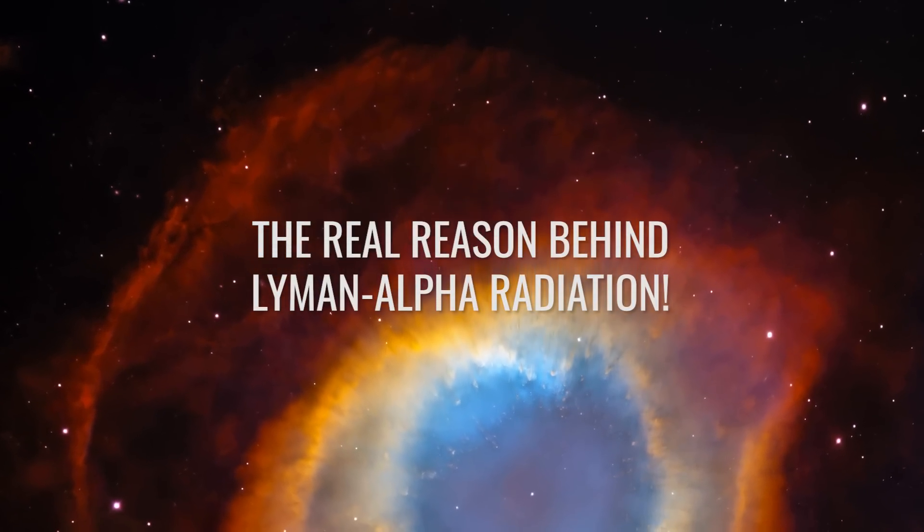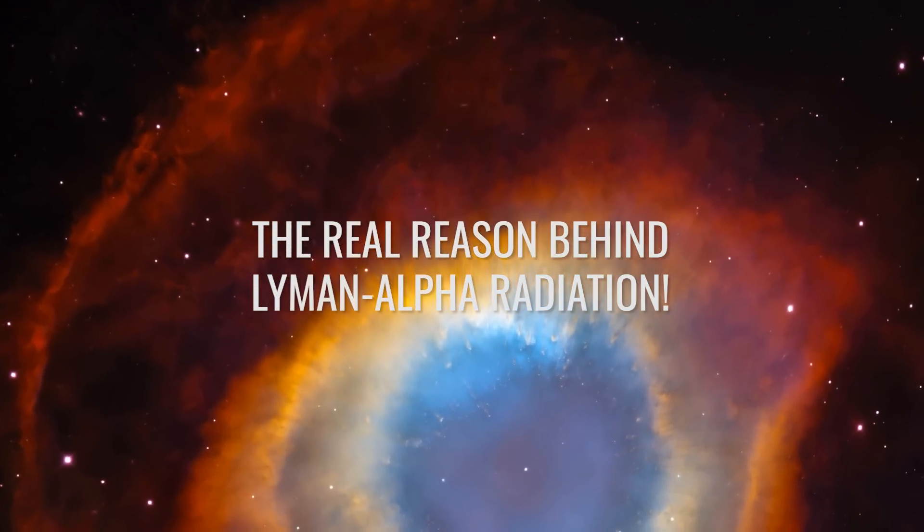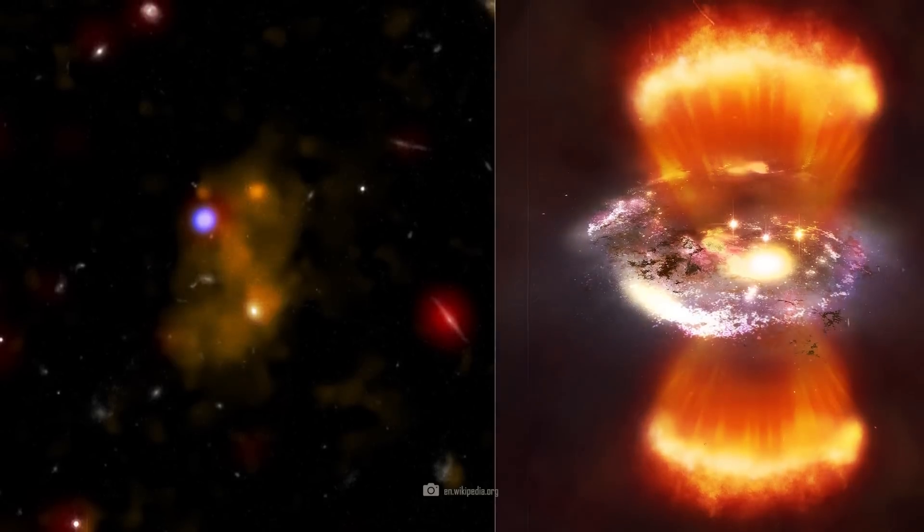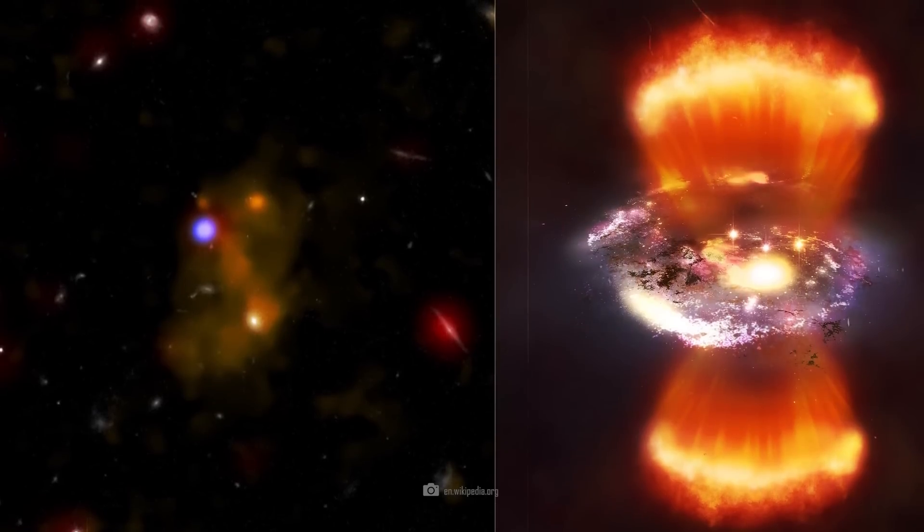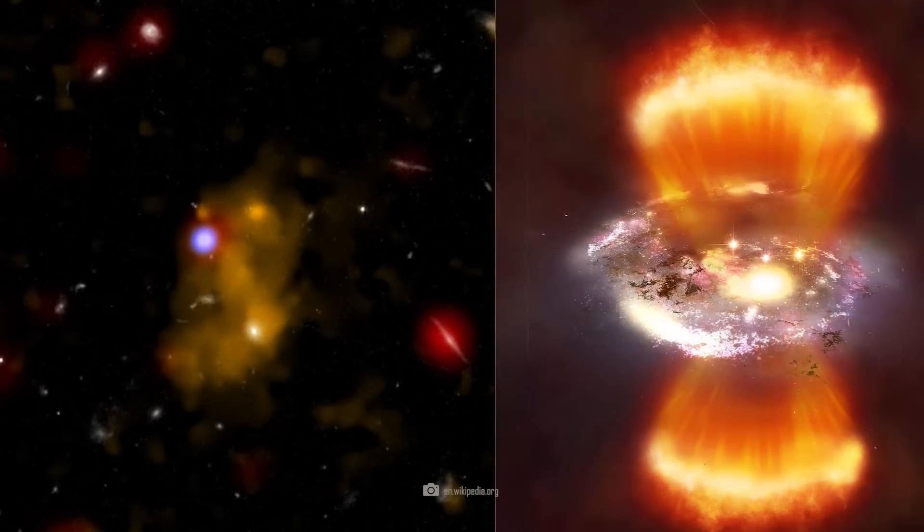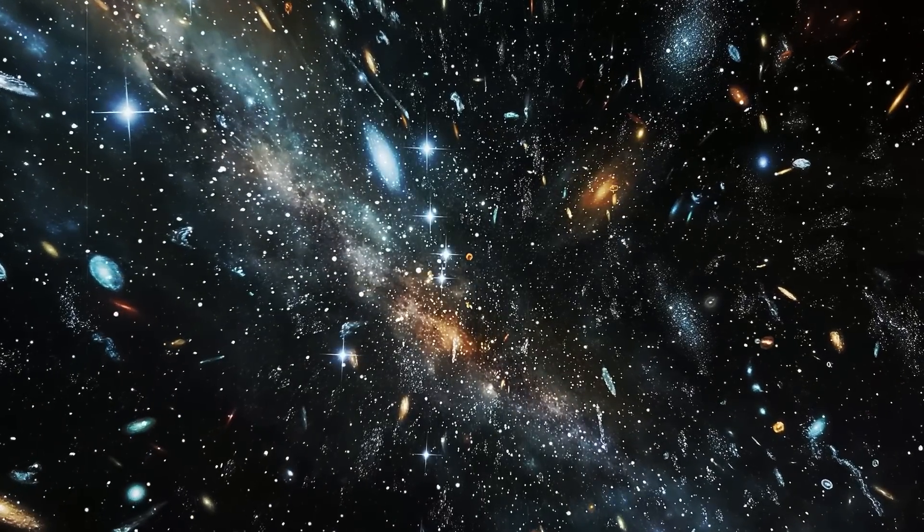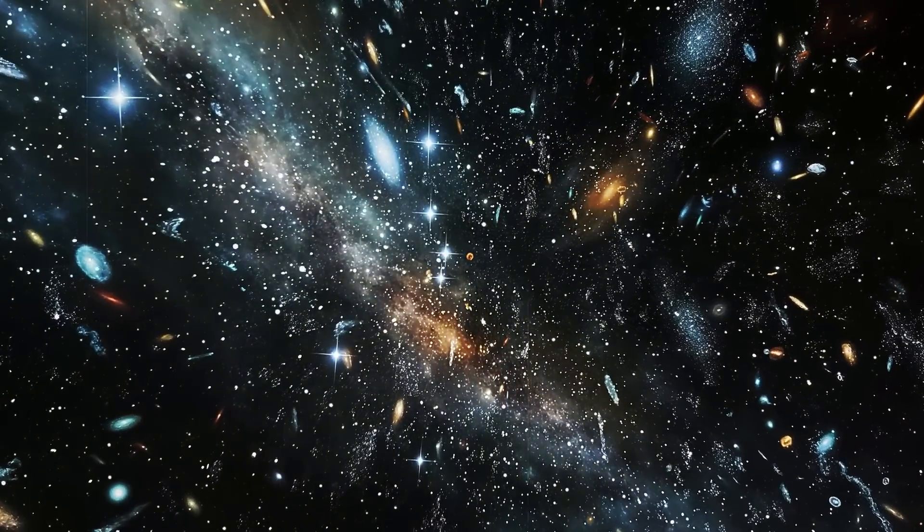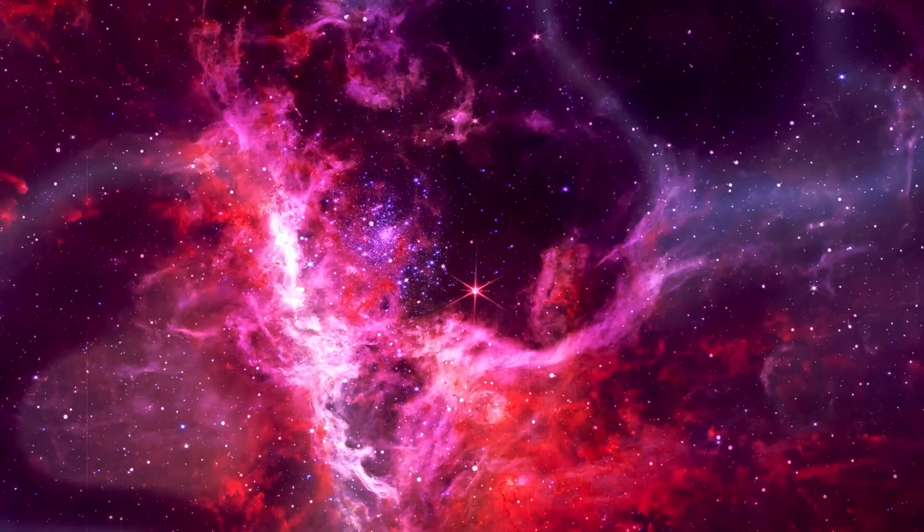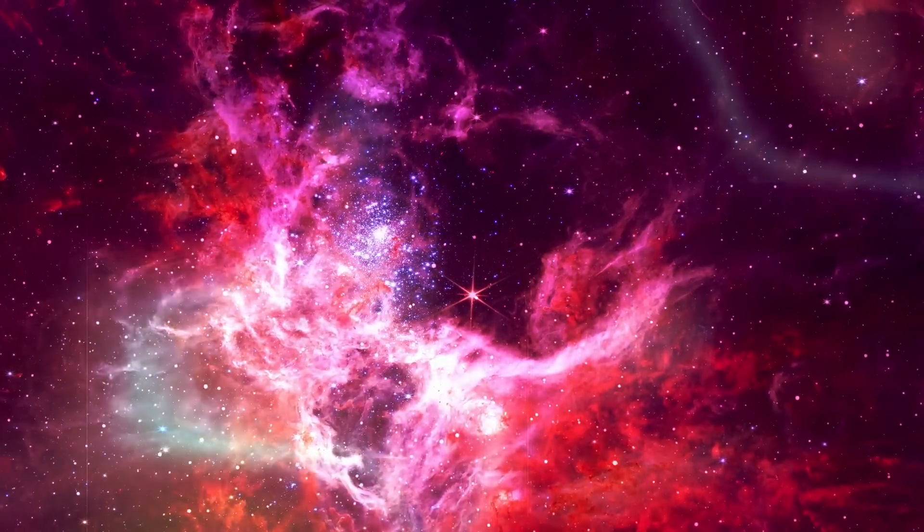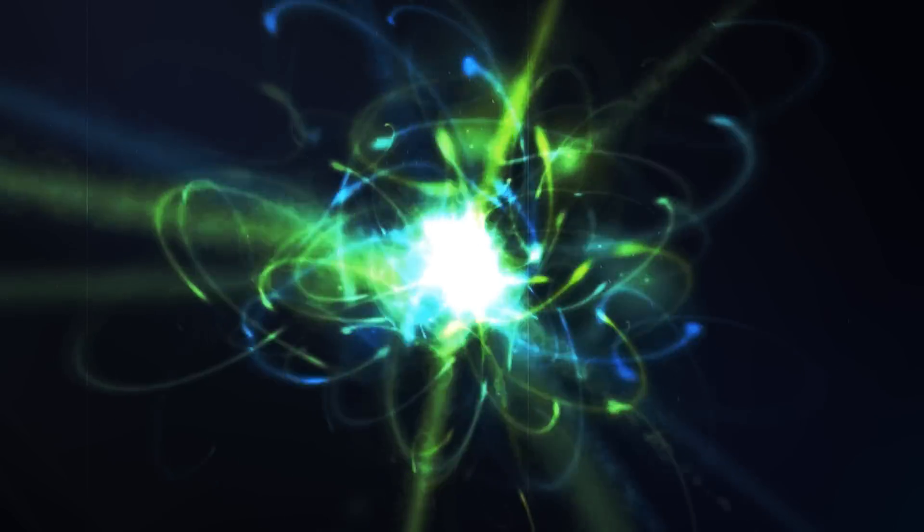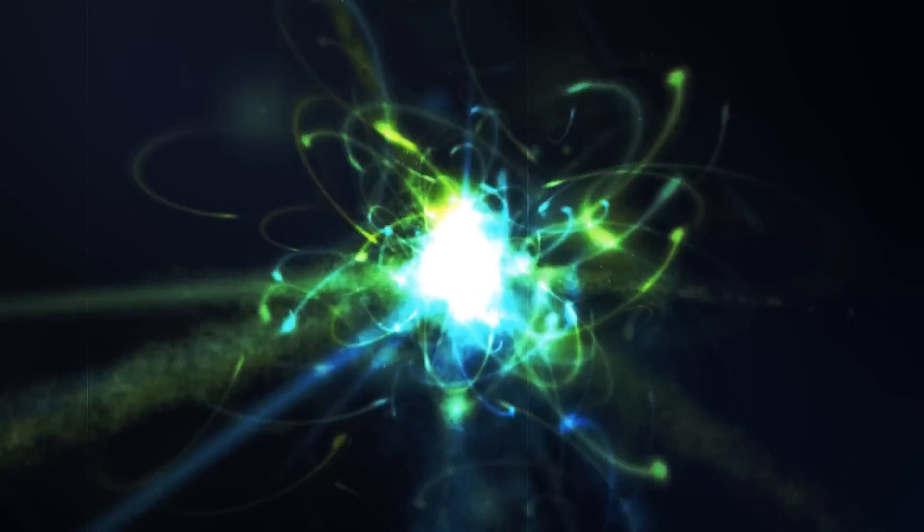What is certain is that Lyman-alpha galaxies play a crucial role in the study of early galaxy formation and evolution. Now we just need to find out what exactly these emissions are telling us. Lyman-alpha emissions are produced by the transition of electrons in the hydrogen atom and are normally found in the ultraviolet spectrum.